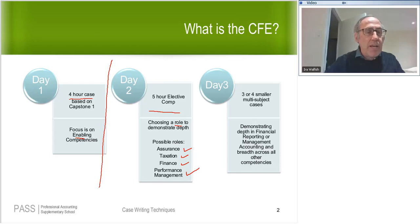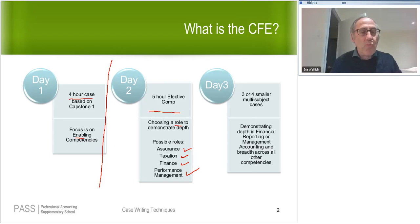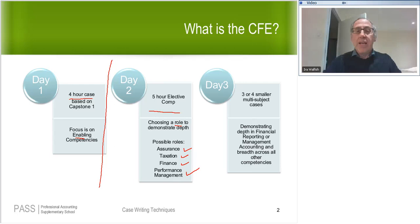A student asks whether someone can pass days one and three independently. Days two and three are treated as one unit — so you can pass day one on its own, and you can pass days two and three as a combined unit. But you cannot pass day one and day three separately. Days two and three are like one unit, and day one is another.